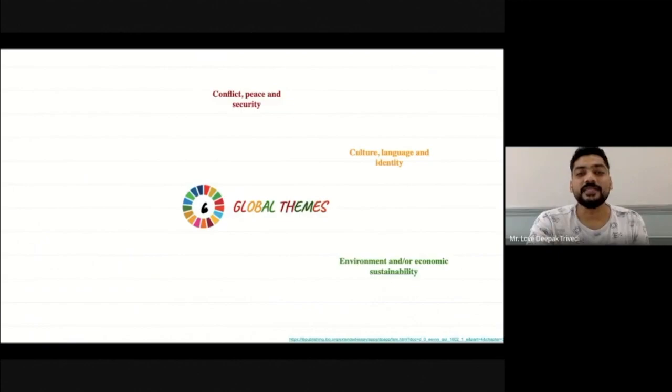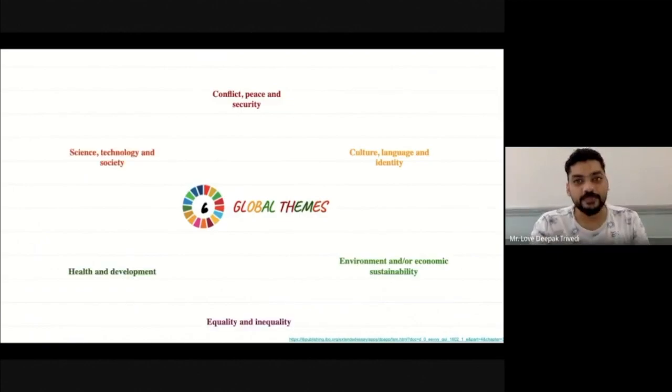These are the six global themes. You choose one of the global themes first. Unlike other extended essays, where you choose your subject first and then extend your feathers to find out the topic. Here, it's the other way around. It's always recommended that you choose your global theme first, the theme that you are interested into. Then, try to find out a topic of interest that you would like that fits into this particular theme. And then, choose your subjects.